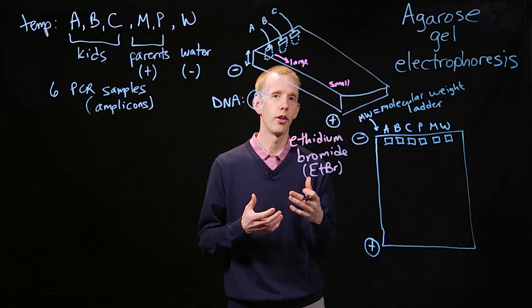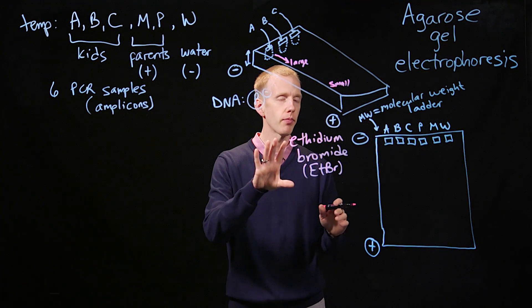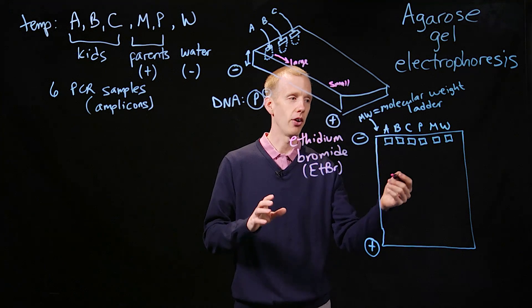But what ethidium bromide does is when it binds to DNA, it fluoresces under black light. So we take this gel, we stain it with ethidium bromide, and then we shine a UV light or black light on this, and then we can start to see the patterns.